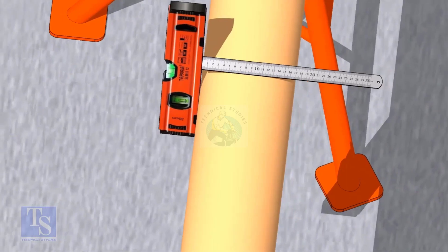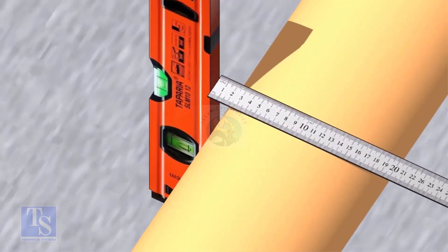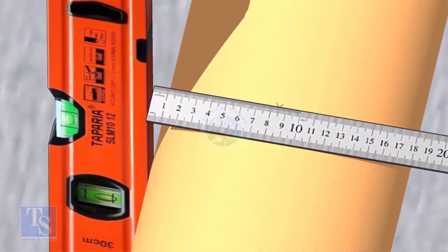OD of a 6 inch pipe is 168 millimeters, so mark the half OD 84 millimeters as shown.